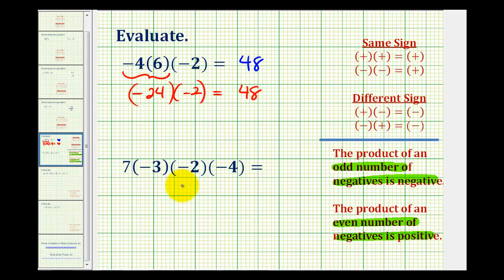Looking at the second example, we have one, two, three negatives, and since three is odd, the product has to be negative.